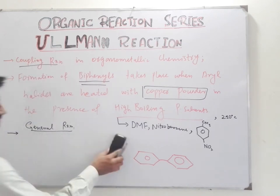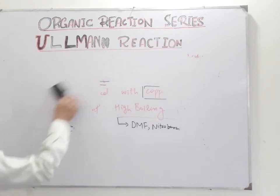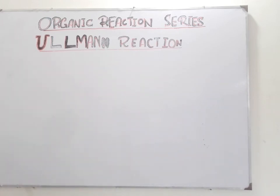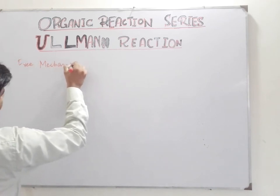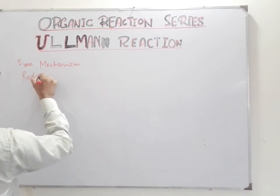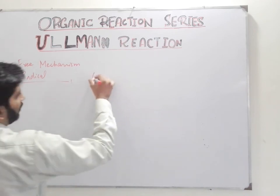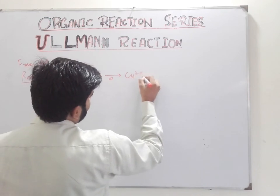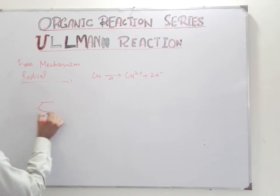Now we are going to talk about the mechanism of the Ullman reaction. Like the Fittig reaction, the Ullman reaction follows the free radical mechanism. Copper undergoes oxidation and gives electrons, and we have aryl halide.